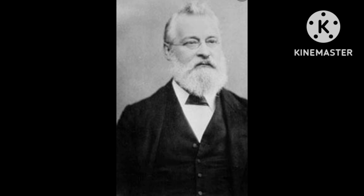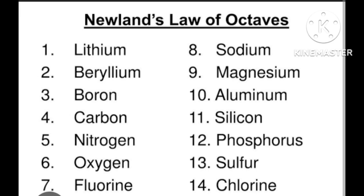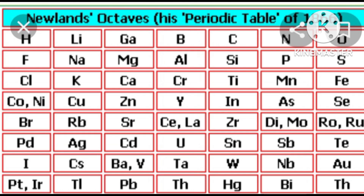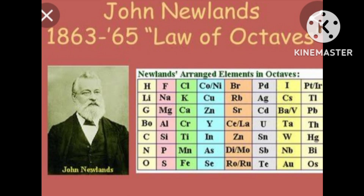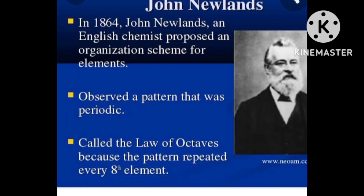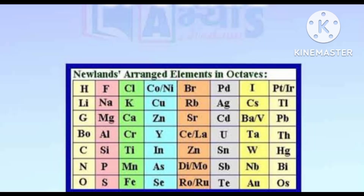John Newland discovered 56 elements. He arranged the known elements in increasing order of their atomic masses, starting with the element having the lowest atomic mass — hydrogen — and ending at thorium, the 56th element. He found that every 8th element has properties similar to the first element, and arranged the 56 elements into octaves.